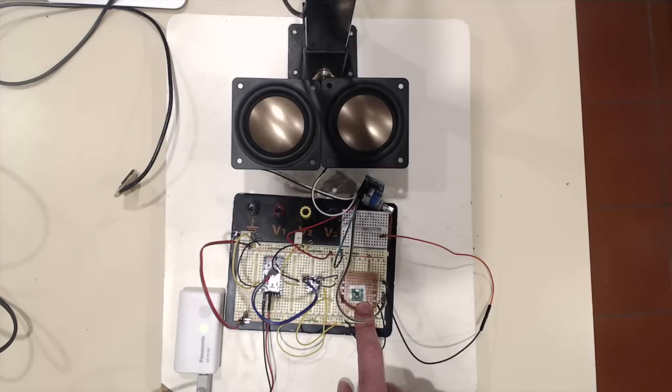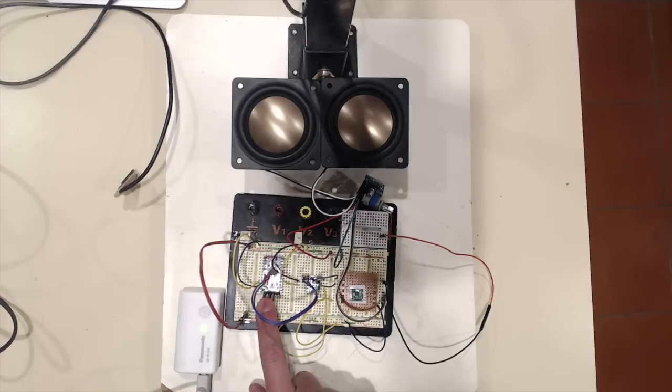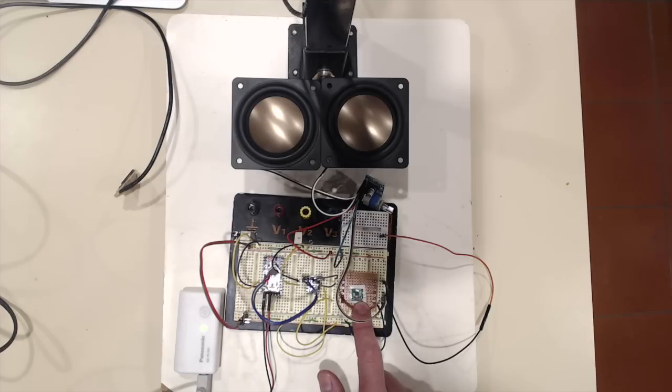and an Arduino Pro Mini that's running the show so that's just programming this little 3.3 volt device via this level shifter because the Arduino is running at 5 volts. And it's just programming it with the 2 wire I2C compatible commands required to get this guy doing what we need it to do